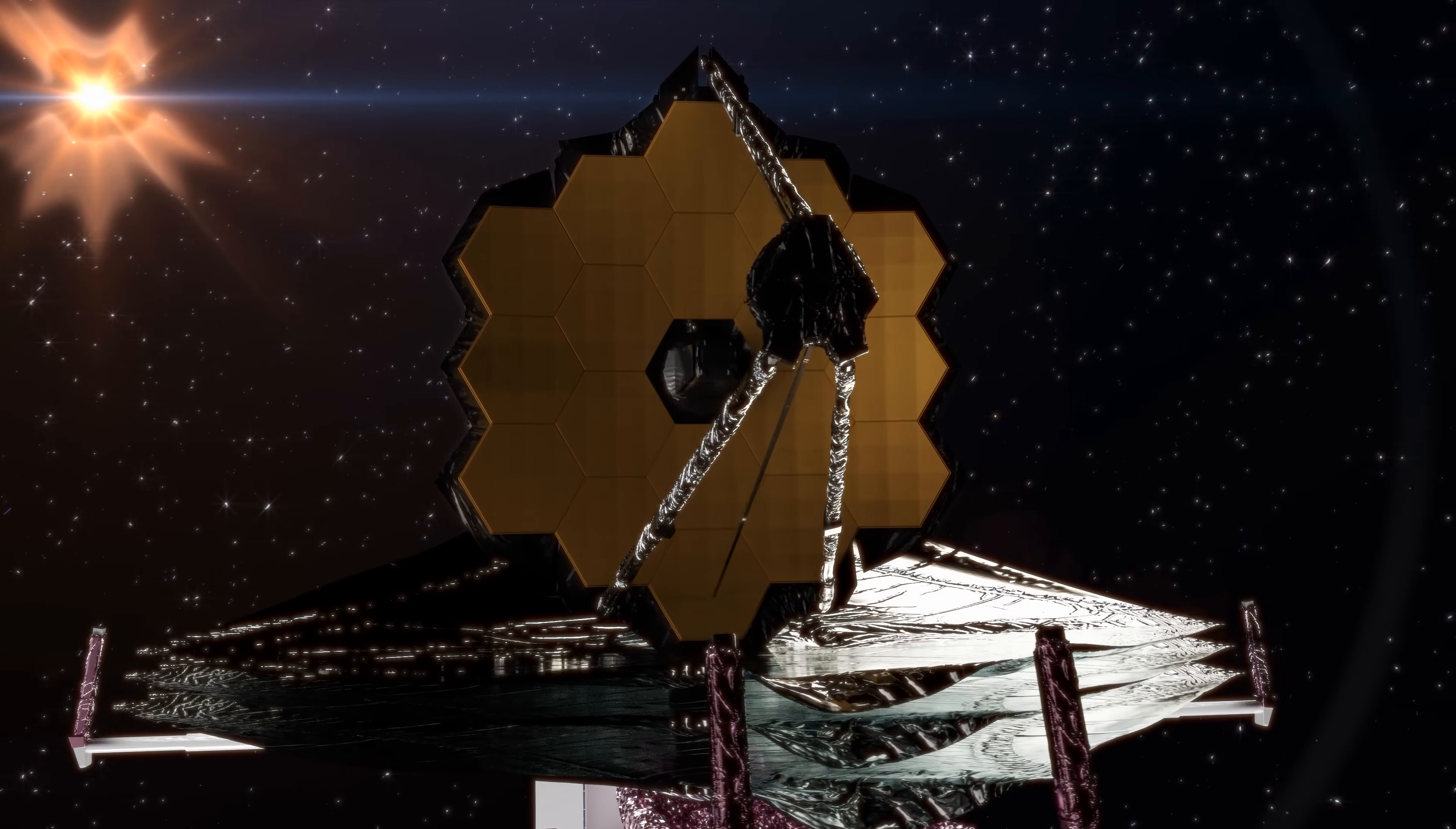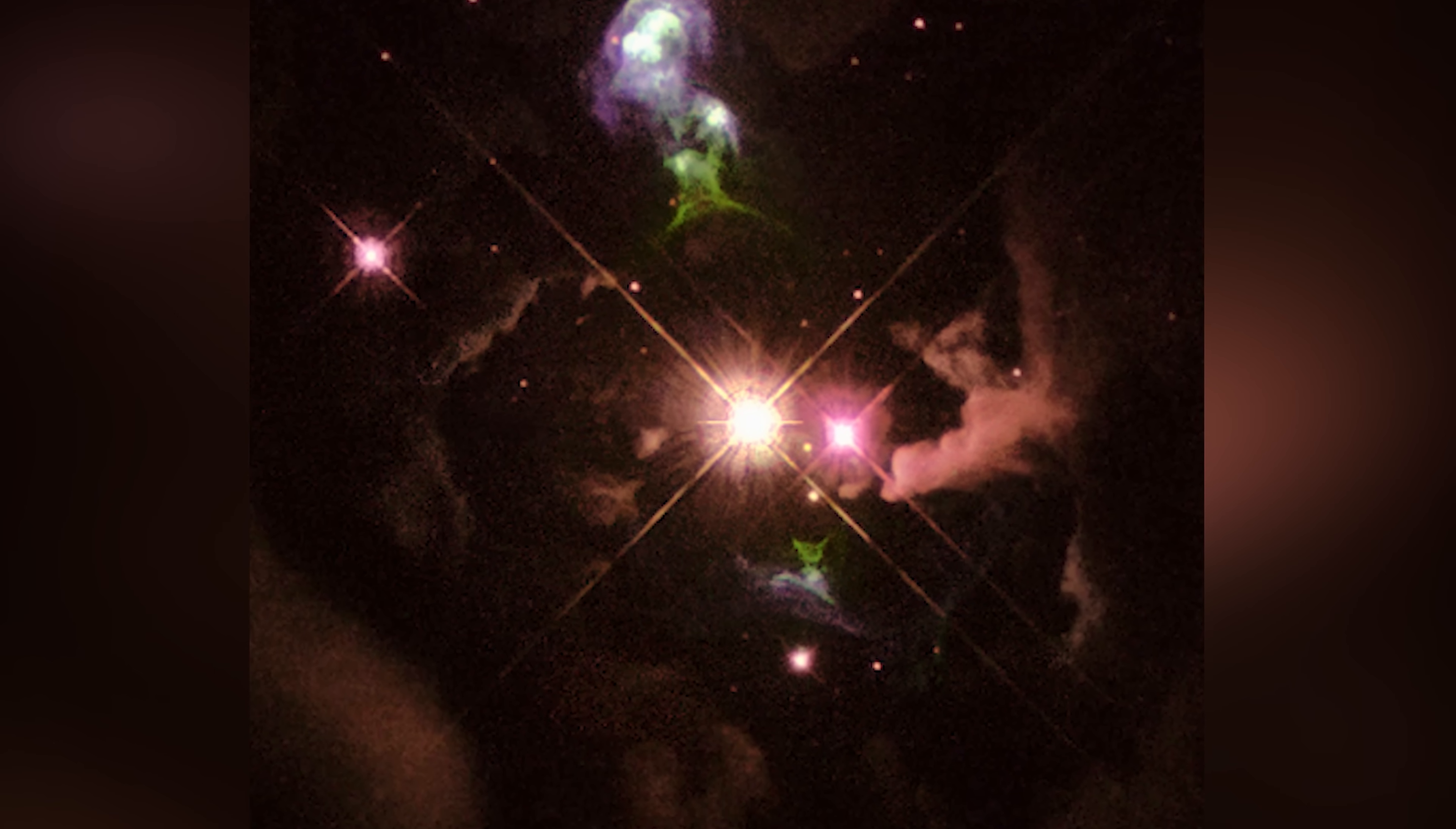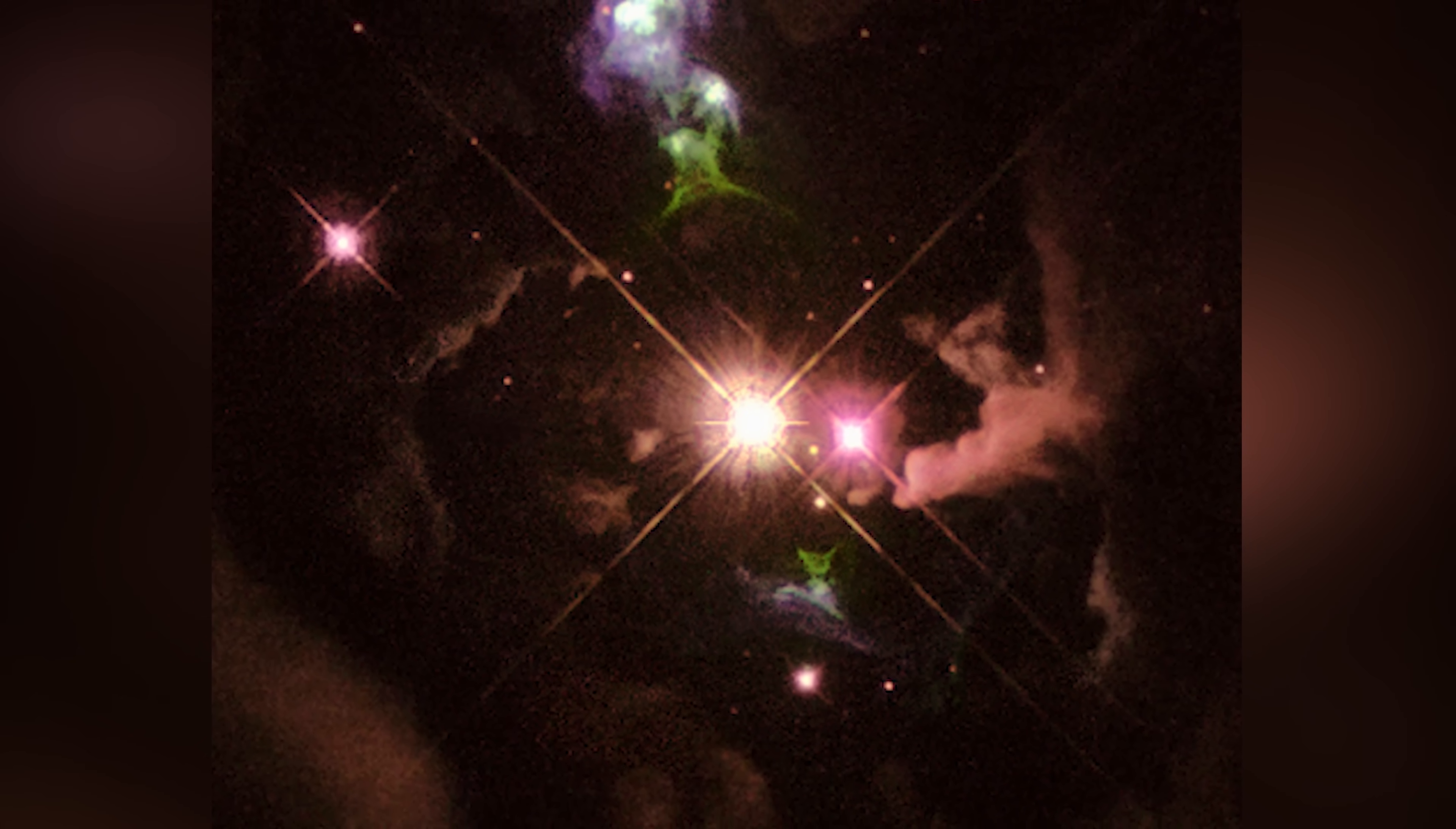Herbig-Haro objects arise from the interaction of the ejected matter with the dust and gas surrounding the star in the nebula. The image shows that a star that is only a few tens of thousands of years old is ejecting two huge jets of plasma into space.